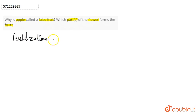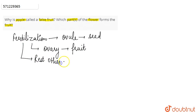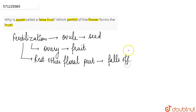Once the fertilization takes place in the flower, then the ovule develops into seed, and the ovary develops into fruit. The ovary develops into fruit and the rest of the other floral parts fall off. So basically, the fruits that develop from the ovary are called true fruits.